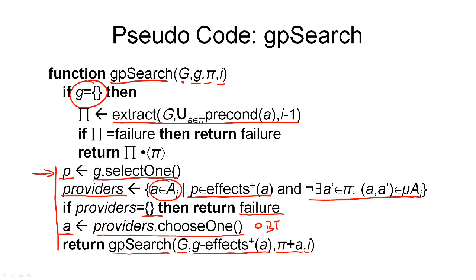Then what we can do is we call extract as shown here. So we give it the same planning graph, and as a new sub-goal, we give it the union over all the preconditions of the actions in our set pi. And we search for these in layer i minus 1. So in the preceding proposition layer.